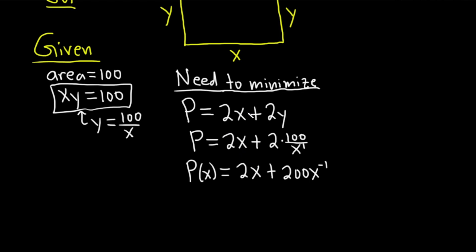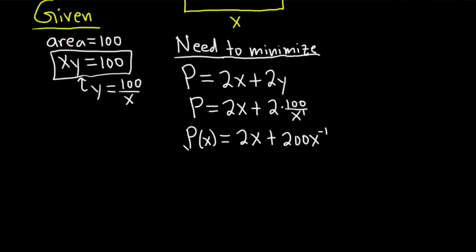Now we're ready to minimize this. So we'll take the derivative and set it equal to 0. P prime of x is equal to, the derivative of 2x is just going to be 2 because the derivative of x is 1. And for this other piece, the 200 times x to the negative 1, you can just bring down the negative 1 and put it in the front. And then subtract 1 from the exponent, so minus 2. And we want this to be equal to 0.